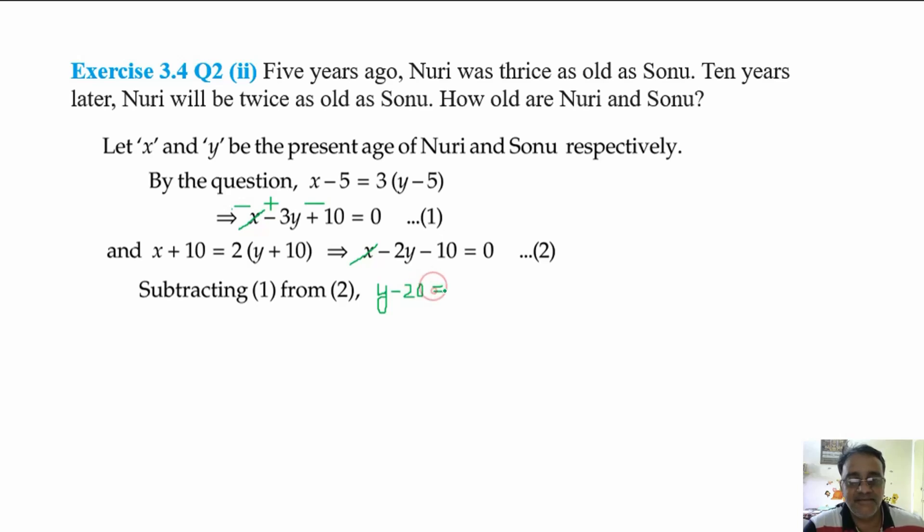Okay. So y is equal to 20 we will get. Finally. So now 20 we have to substitute in equation number 2. So y pae substitute karo, so minus 40 minus 10 will get x minus 50 is equal to 0.